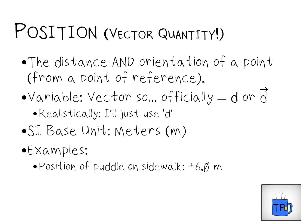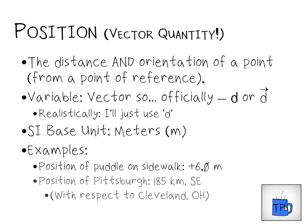Examples might be the position of a puddle on the sidewalk: if I am located on a sidewalk and the puddle is six meters in front of me, that might be plus six meters — it's with respect to where I start, six meters away. A more advanced example might be the position of Pittsburgh being 185 kilometers in the southeast direction, where we specify the reference point. Starting in Cleveland, Ohio, Pittsburgh is 185 kilometers away — that's the distance — and the direction is southeast. So you get your distance and orientation.